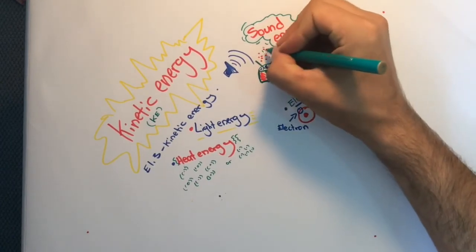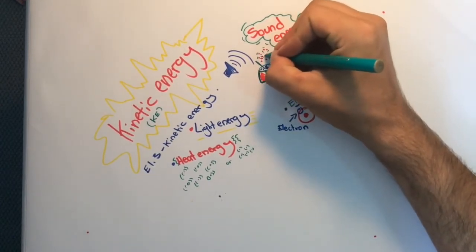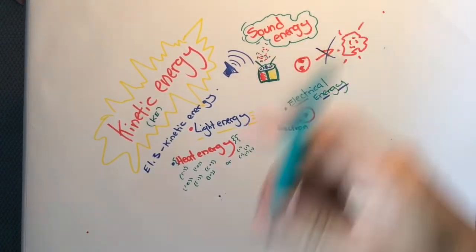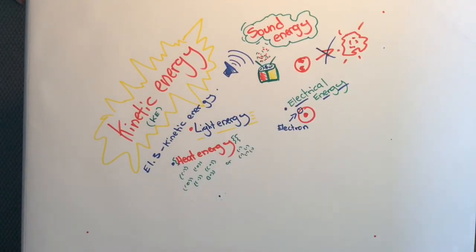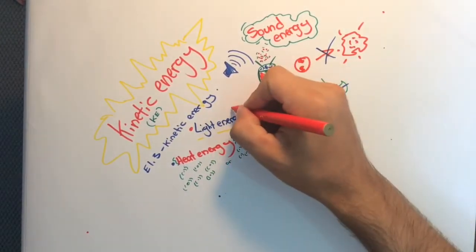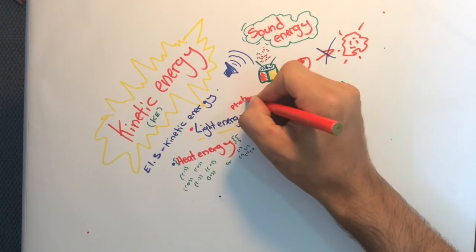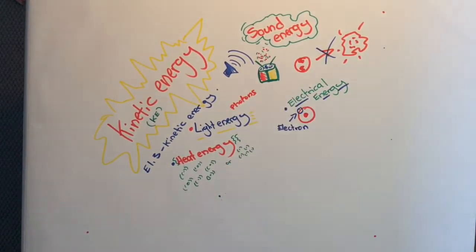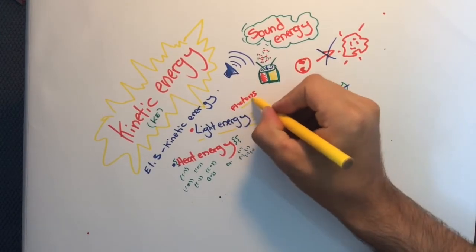Let's move on to light energy. Light energy is actually electromagnetic energy, which is made up of photons, which move at 299 million, roughly meters per second, or for people like me, really, really fast. Photons are tiny particles that move, hence light energy can be classified as kinetic energy.